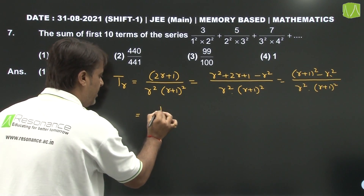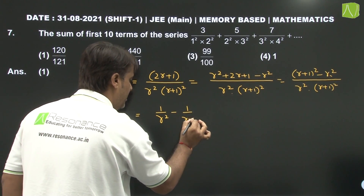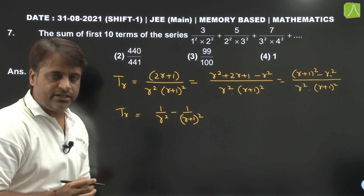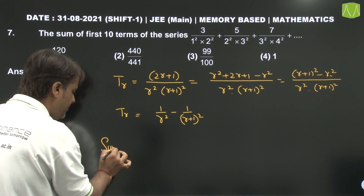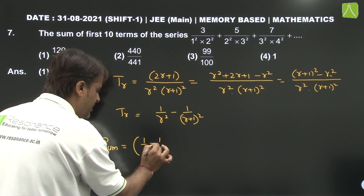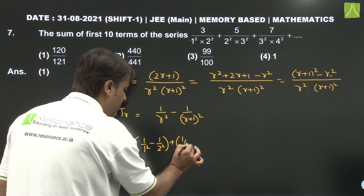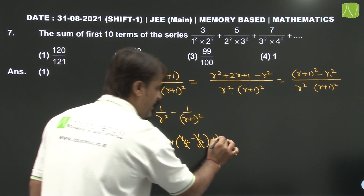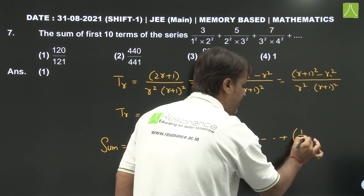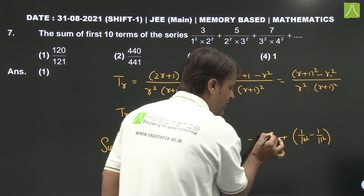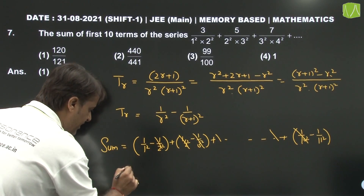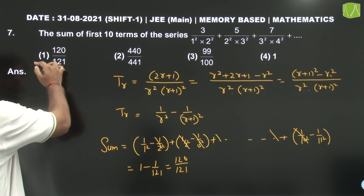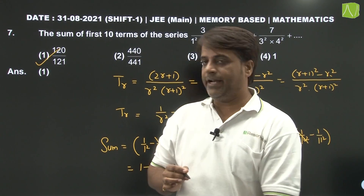This breaks into (1 upon r squared) minus (1 upon (r plus 1) squared). So the sum telescopes: (1/1² minus 1/2²) plus (1/2² minus 1/3²) plus ... with cancellation pattern leaving 1 minus 1/121. Eventually we get 1 minus 1 upon 121, giving the answer 120 upon 121. The first option is the correct answer.